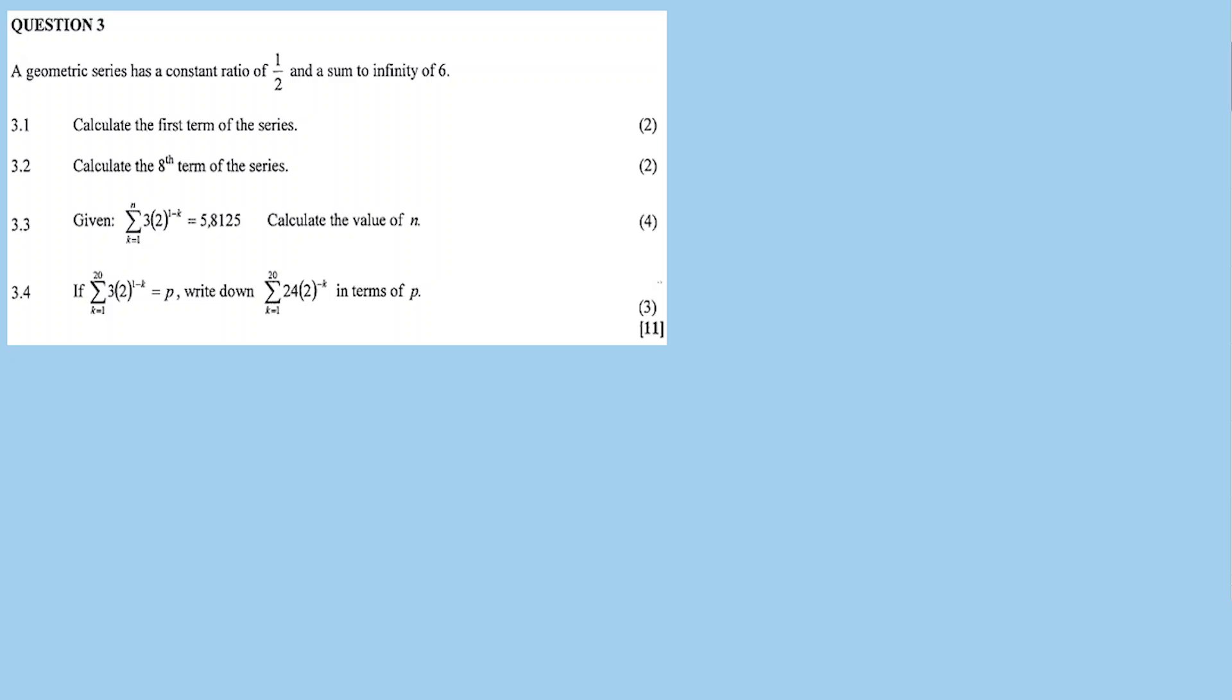Okay, question 3. A geometric series with a constant ratio of 1 over 2 and a sum to infinity of 6. In the description box, there are links for other recordings for this November 2018 mathematics paper 1. Thanks for tuning in.